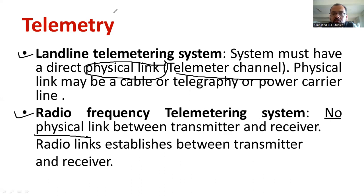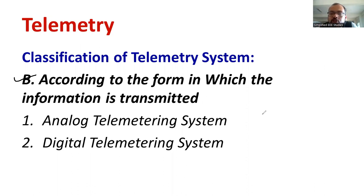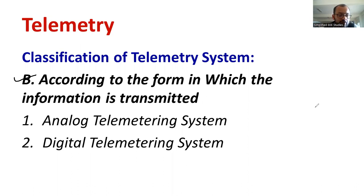I would like to discuss the classification based on the second criteria: according to the form in which the information is transmitted. There are different forms such as analog and digital. Based on the form of information transmitted, there are two types of telemetry systems. One is the analog telemetry system, and the other is called the digital telemetry system.